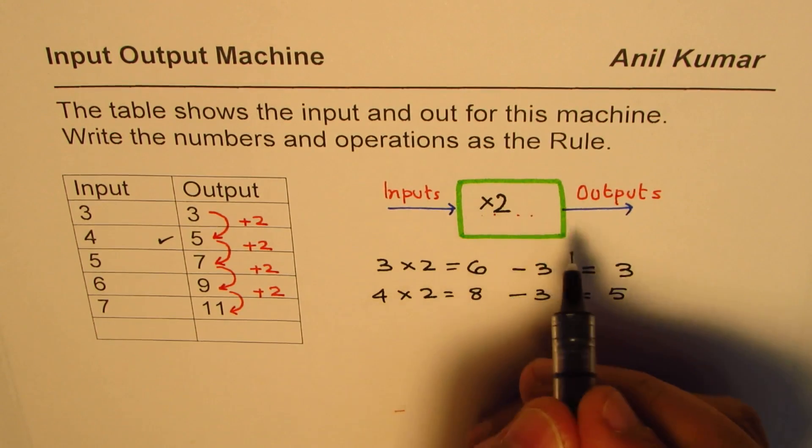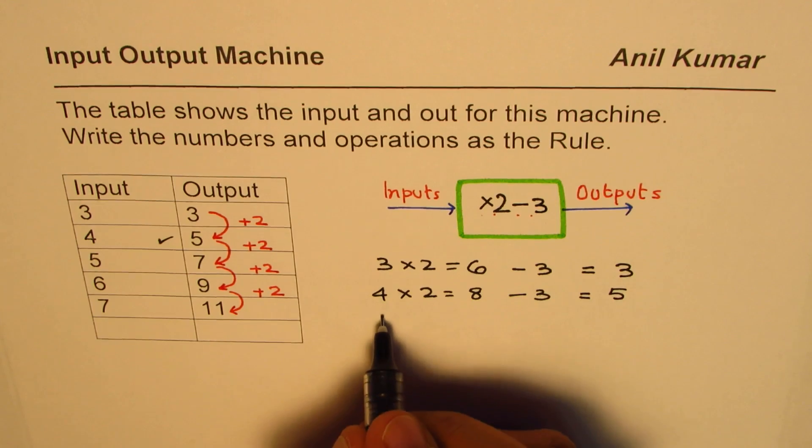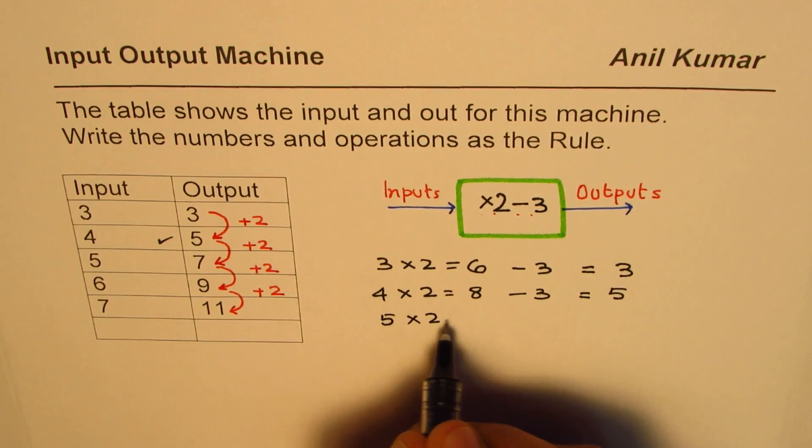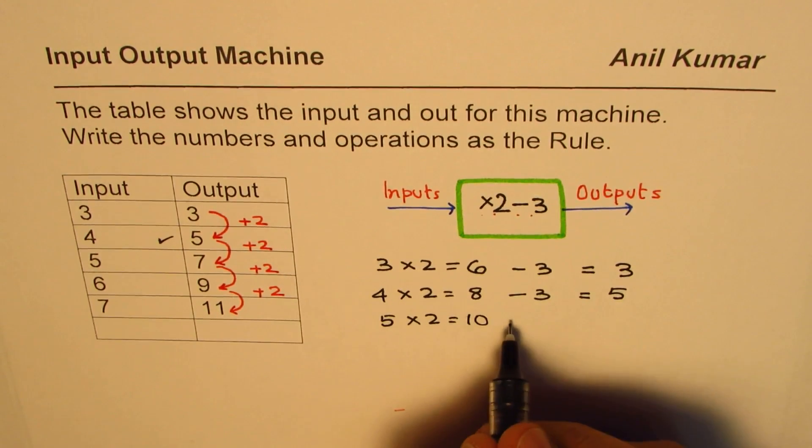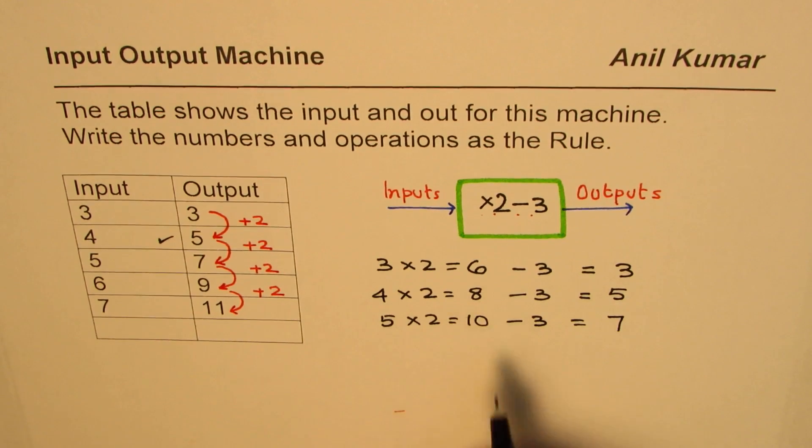Let me test the next number. If I do 5 times 2 I get 10, and if I do minus 3 I do get 7. So that is correct. So that is how we can get the relation between input and output.